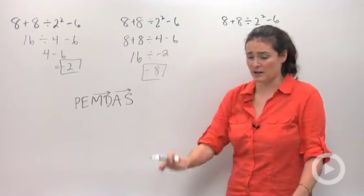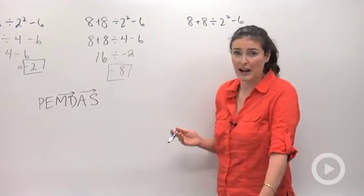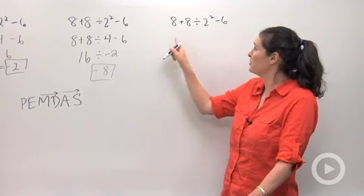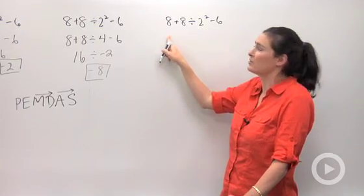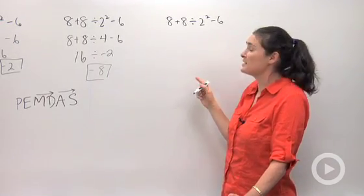So I want to revisit this problem we started with. Only now let's do it the correct way. First we want to do parentheses. Ah, there are none. So that's okay.